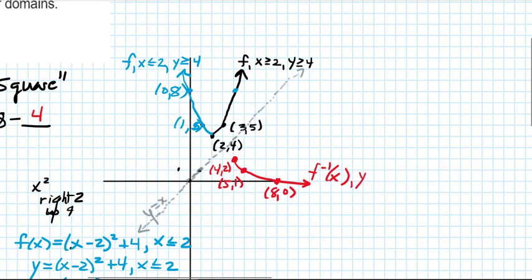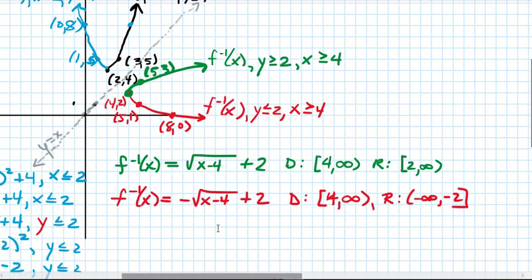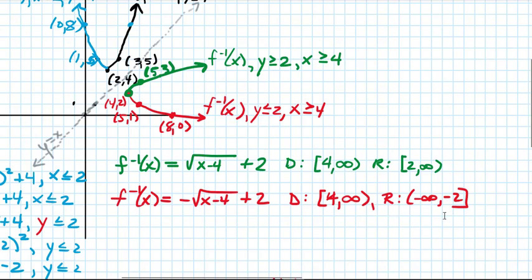For this second inverse, the y values are less than or equal to 2 and the x values are greater than or equal to 4. So we have our two inverse functions: f inverse of x equals square root of x minus 4 plus 2 with domain 4 to infinity and range 2 to infinity; and f inverse of x equals negative square root of x minus 4 plus 2 with domain 4 to infinity and range negative infinity to 2. I hope you found this video helpful — please remember to like it, as every thumbs up helps other students find the video.